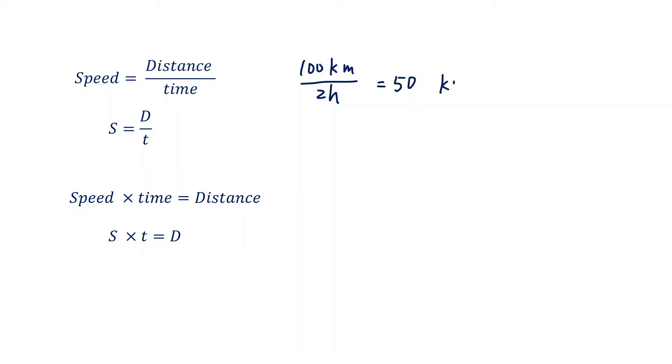The unit is kilometers per hour. Sometimes we use a slash to represent per, so it's kilometers per hour. This is the normal speed of a car in the city. We normally use S to represent speed, D to represent distance, and T to represent time.